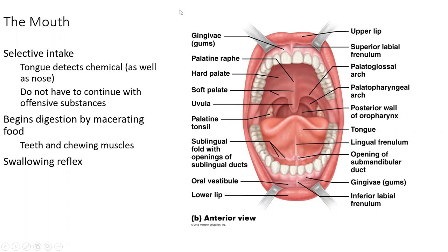The mouth gives us selective intake — we get to choose what comes in. Our tongue acts similarly to our nose in that it can detect chemicals, which is why food doesn't taste the same when you're stuffed up. At this point, when you put something in your mouth, you are still able to remove it. But once you start swallowing, it is a reflex and it just keeps going — you can't stop it once you do start swallowing.